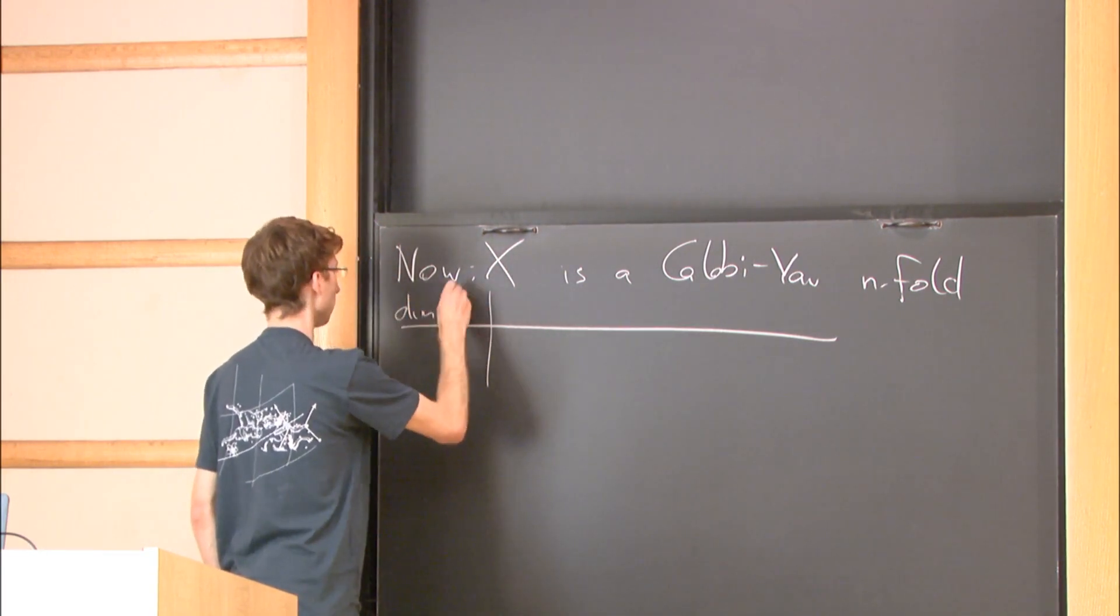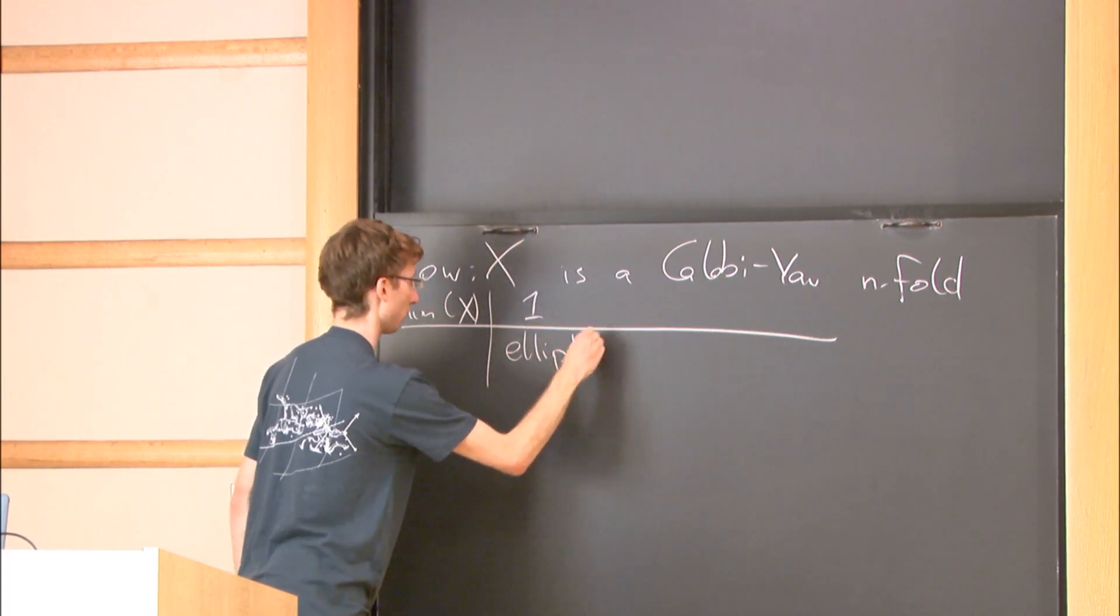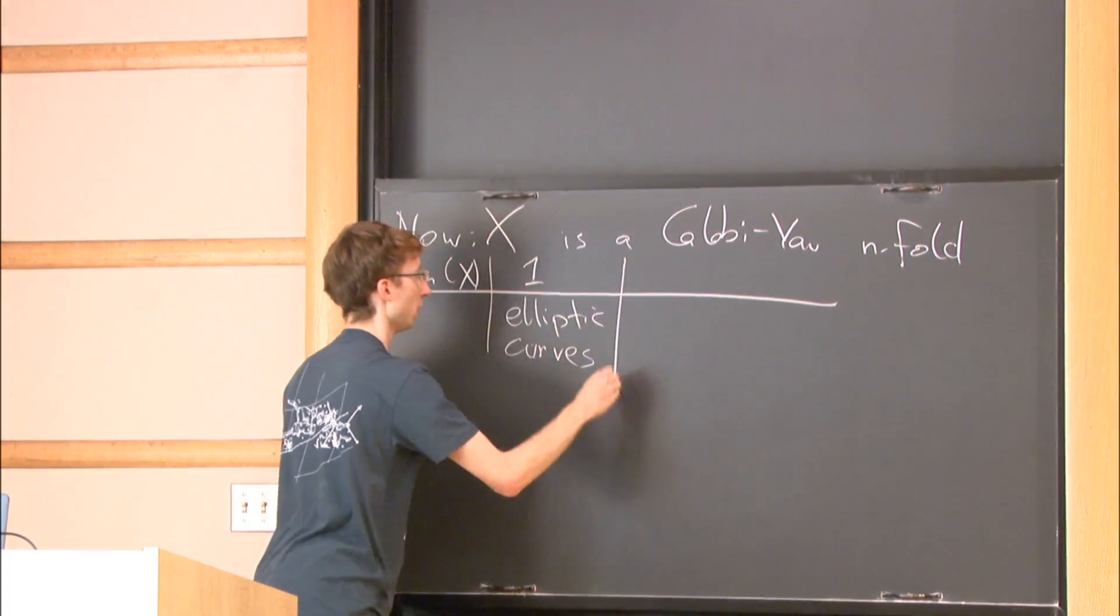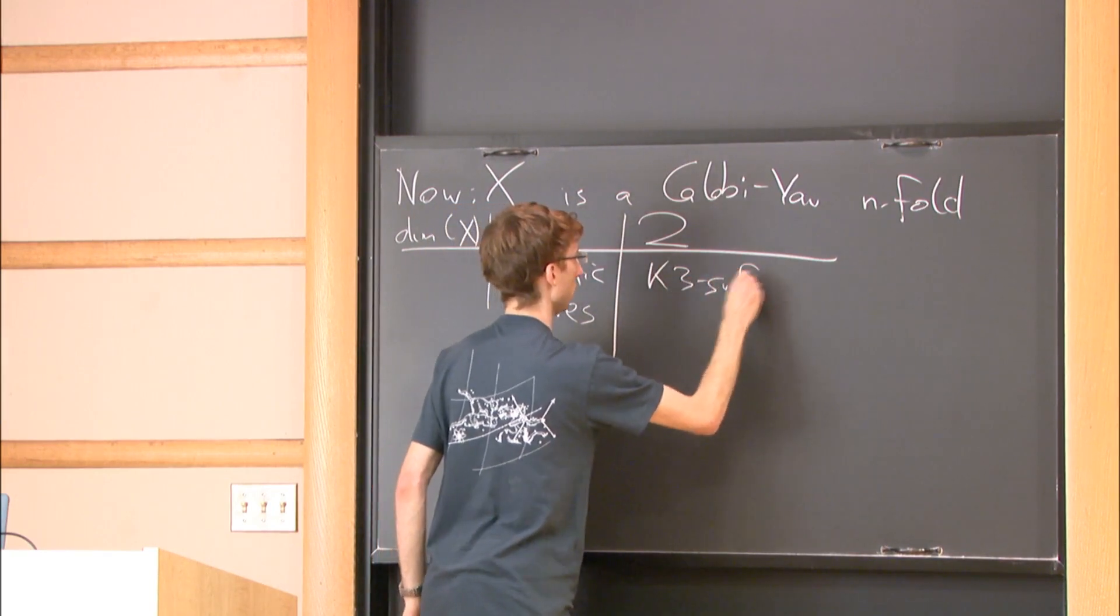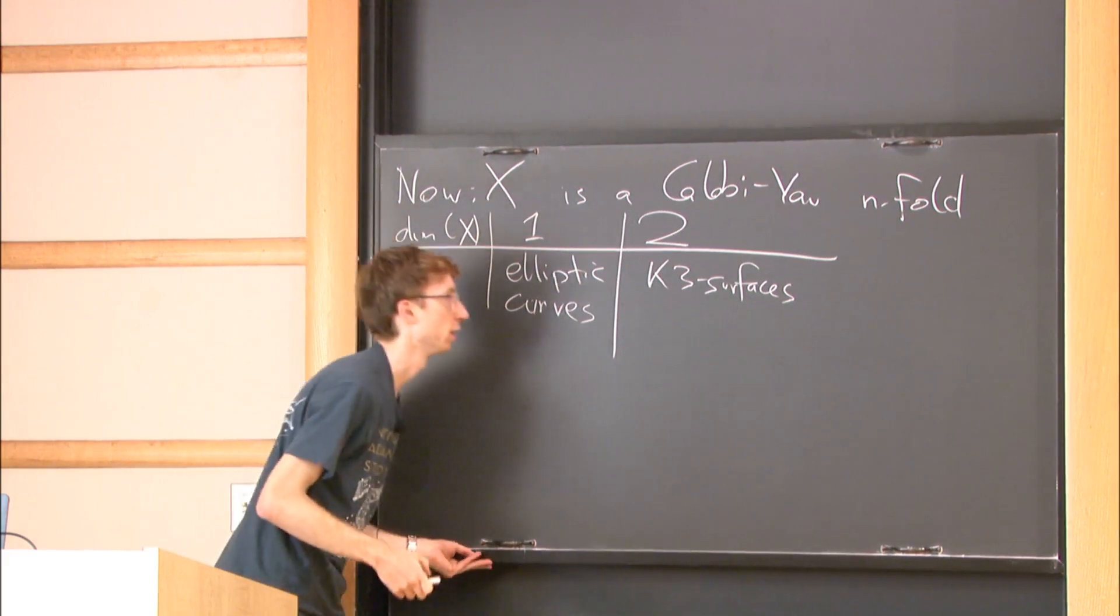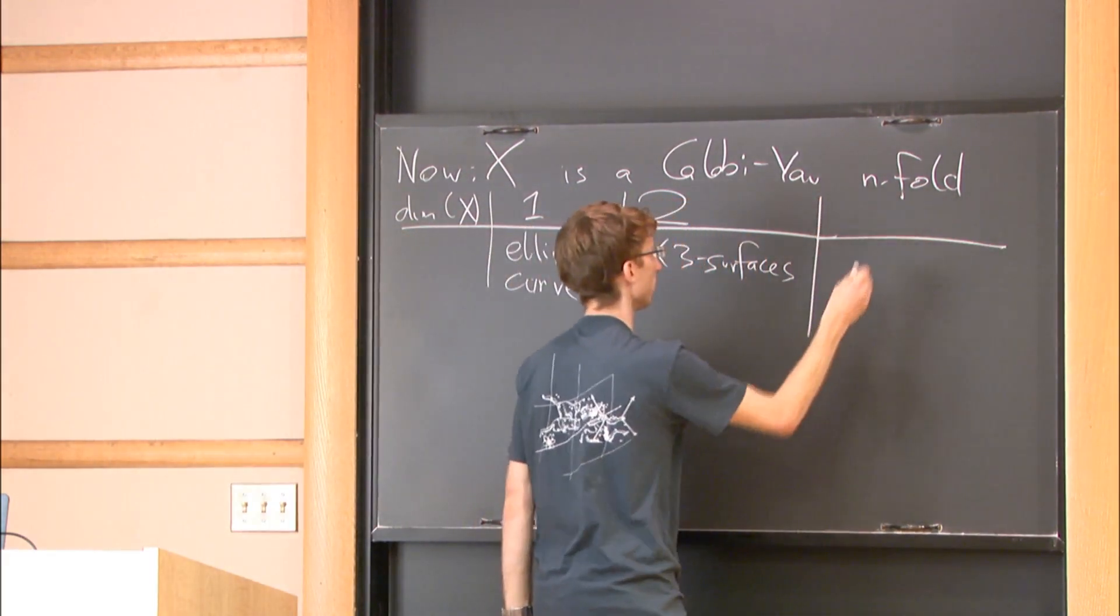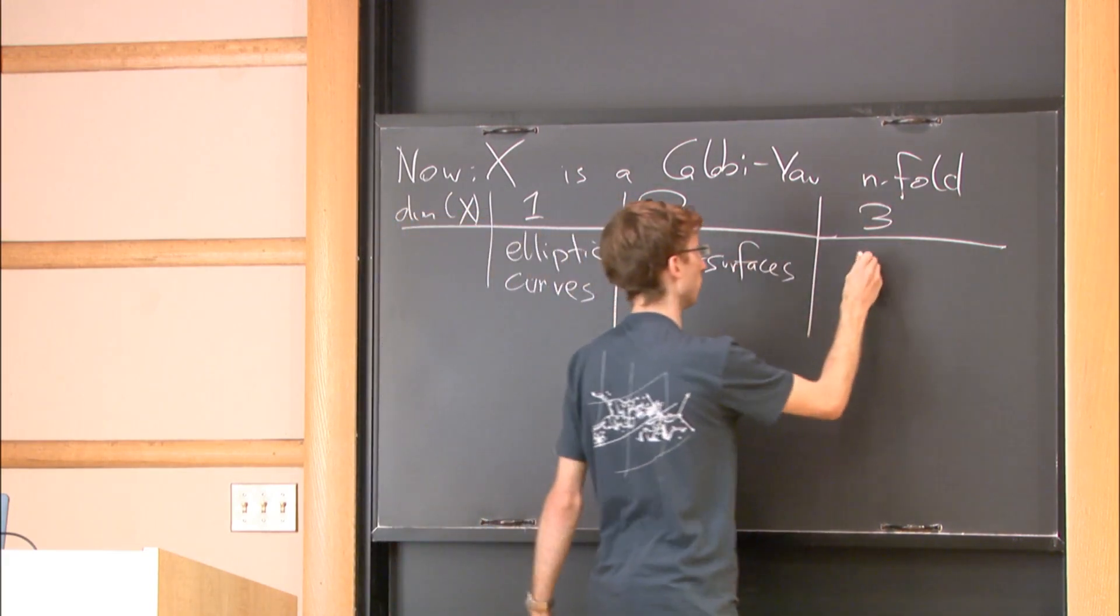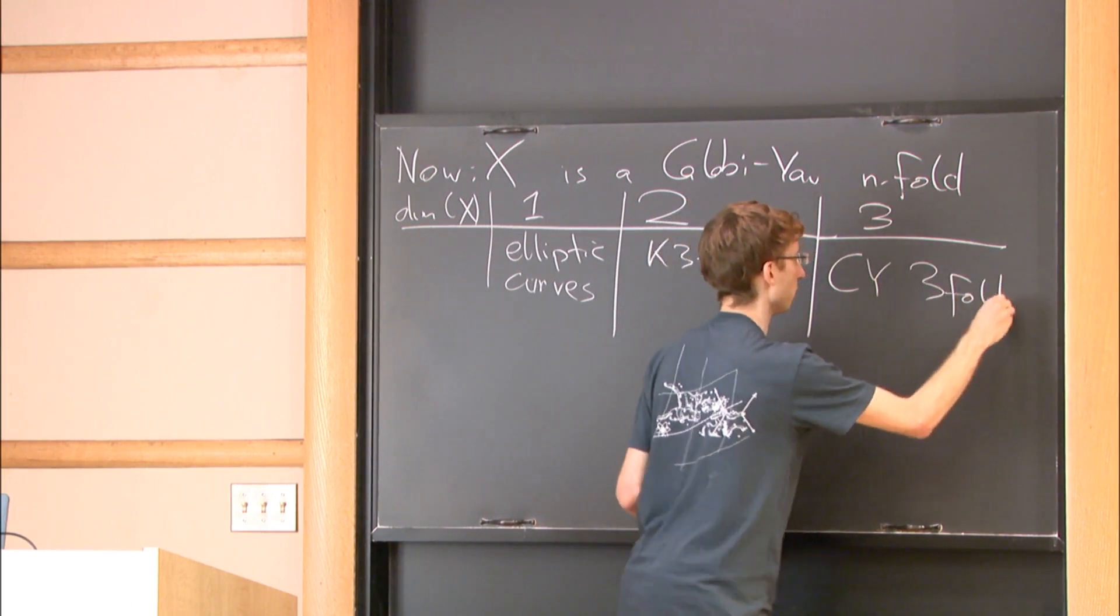Namely, if dimension of X is 1, these are just elliptic curves. Everyone knows these. In dimension 2, they are called K3 surfaces, and they featured prominently in Alex's talk yesterday. I will mostly consider the three-dimensional generalization of these two - they're called Calabi-Yau threefolds.